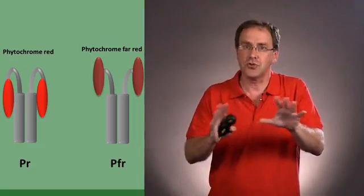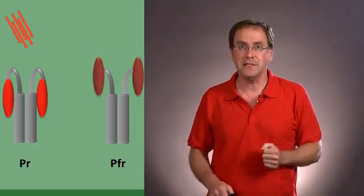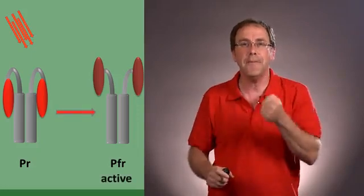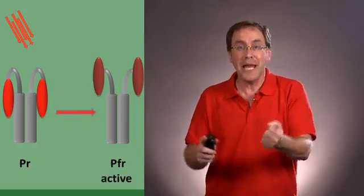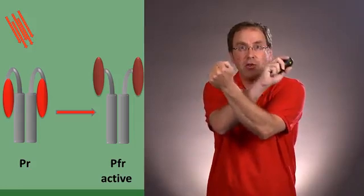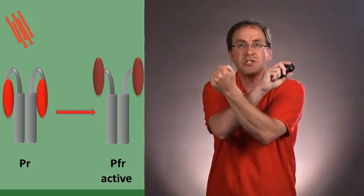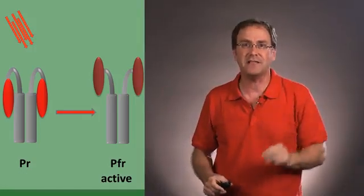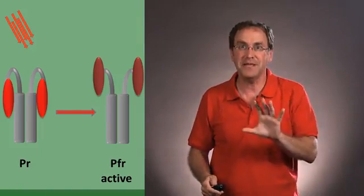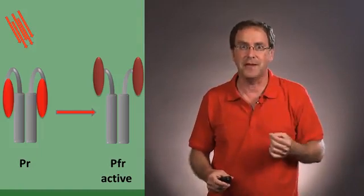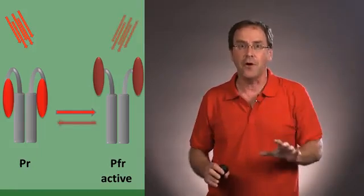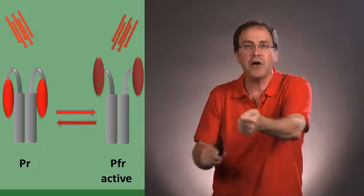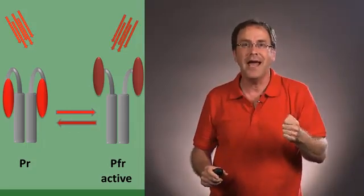And now here comes the part that gets a little tricky. PR absorbs red light and once it absorbs the red light it changes its conformation to become PFR. We now know molecularly there's a slight change in the way the protein is formed in its structure and it becomes PFR and that is what makes it active.